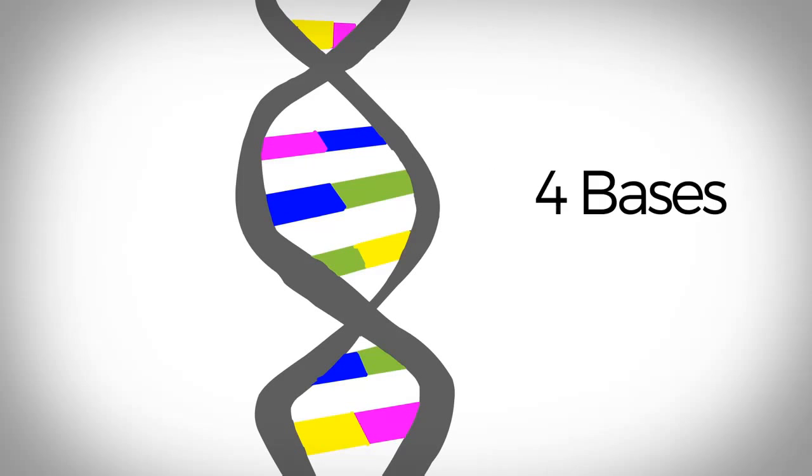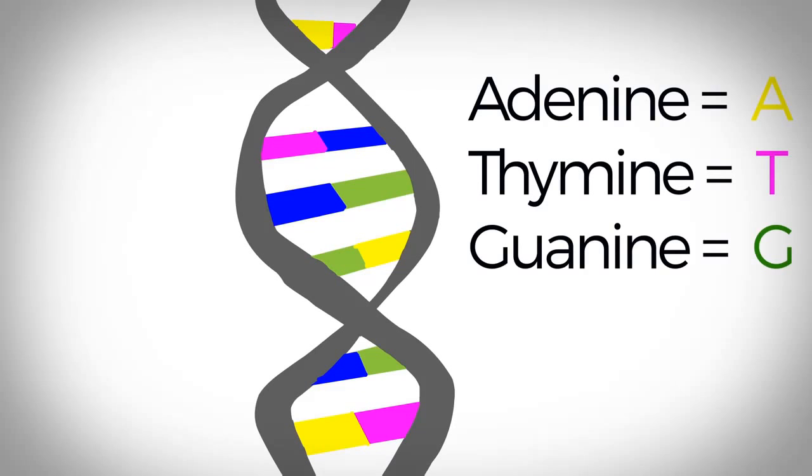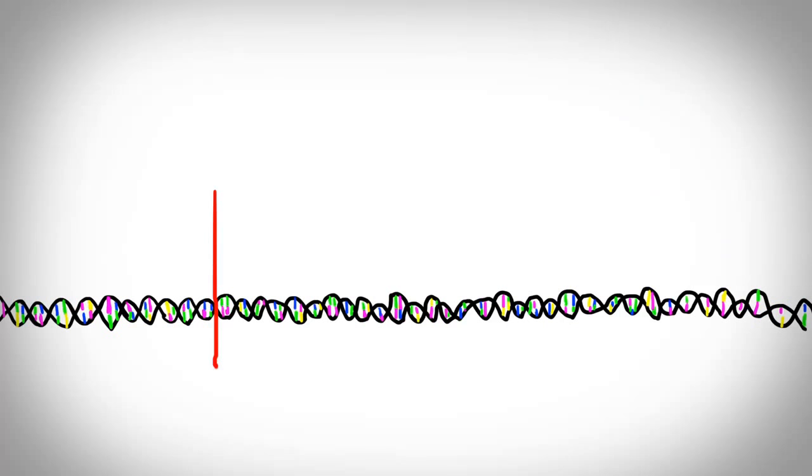The steps of the ladder are made of four bases. Adenine is A, thymine is T, guanine is G, and cytosine is C. A stretch of the DNA is called a gene.